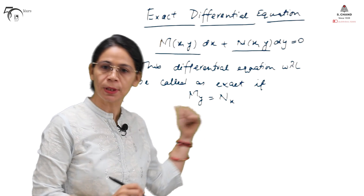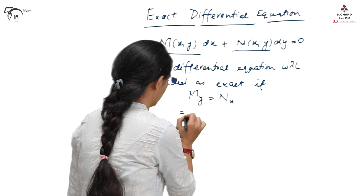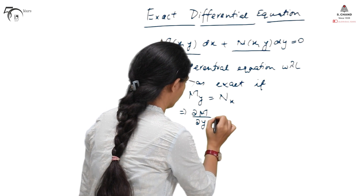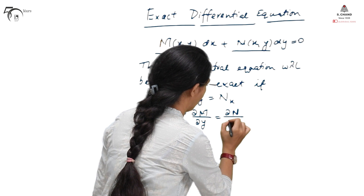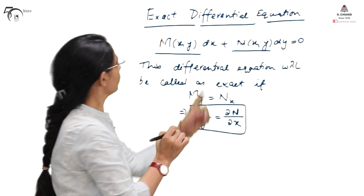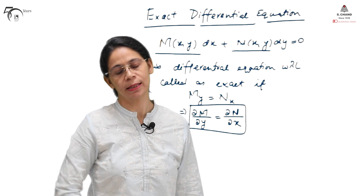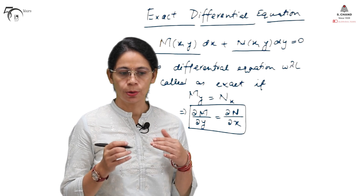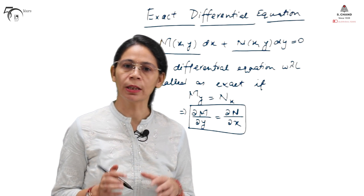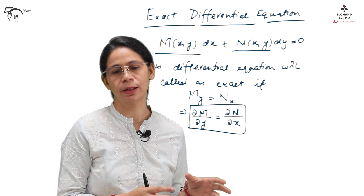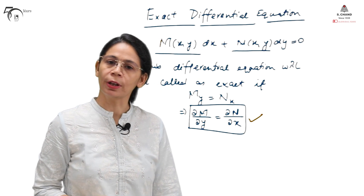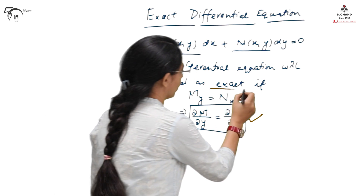The subscript stands for the derivative. That is, it can also be written as: the partial derivative of M with respect to y is equal to the partial derivative of N with respect to x. If this condition is satisfied, then the differential equation is called an exact differential equation. This is how we identify whether a given differential equation is exact or not.